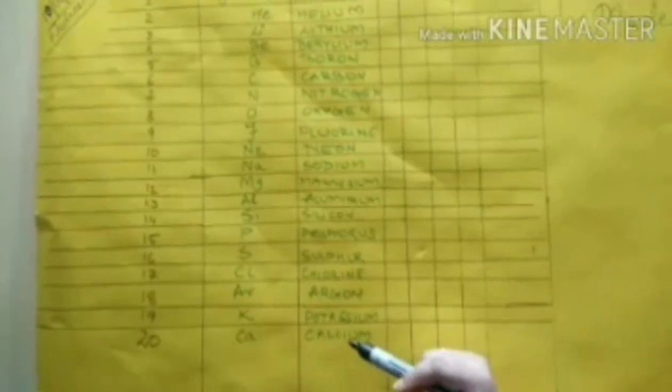So let me start first the name of the elements from atomic number 1 to atomic number 20. It is hydrogen, helium, here the symbol has been also given, lithium, beryllium, boron, carbon, nitrogen, oxygen, fluorine, neon, sodium, magnesium, aluminum, silicon, phosphorus, sulfur, chlorine, argon, potassium and calcium.